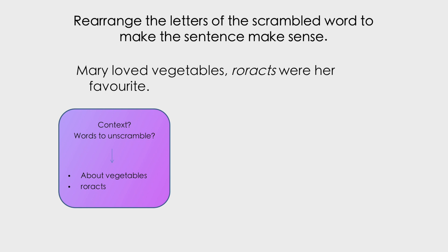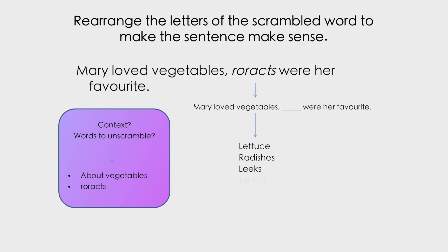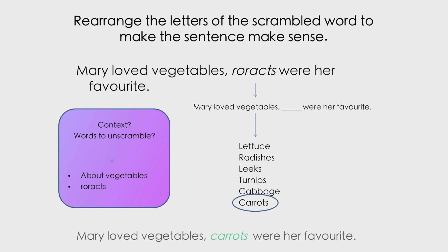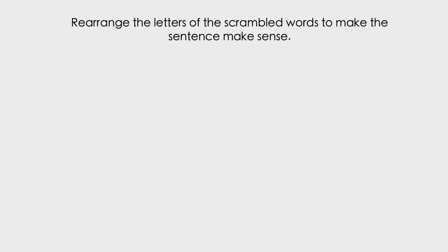The context is vegetables. Mary loves vegetables, and the word to unscramble is 'roaracts.' If we imagine roaracts not being there, we think: what vegetables could we fill that with? It's not lettuce, radishes, leeks, turnips, or cabbage — but it could be carrots. Yes, carrots works! Roaracts is an anagram of carrots. So the answer is: 'Mary loved vegetables. Carrots were her favourite.'